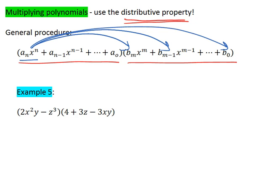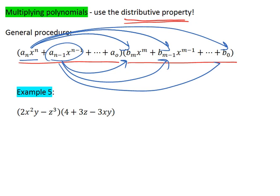Once we've done that, we take our second term in our first polynomial and we multiply that term by every term in the second polynomial. This process continues until we've gone through every term in the polynomial. Now, the general procedure is a little abstract. It's probably easier to look at an example.